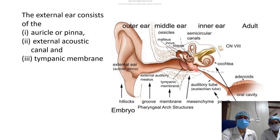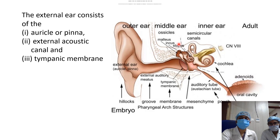The Eustachian tube has a medial and lateral opening. The medial or pharyngeal opening is encircled by lymphoid tissue known as the tubal tonsils, and medially there is an aggregation of lymphoid tissue in the nasopharynx known as the adenoids. The inner ear consists of the cochlea and semicircular canals, supplied by the eighth cranial nerve — the vestibulocochlear nerve — which enters the inner ear via the internal acoustic meatus.